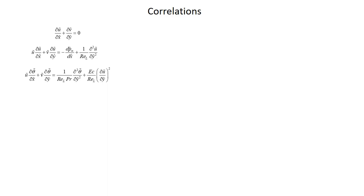This is where we left off last time. We had made our boundary layer equations dimensionless, and we ended up with these equations here. We did that because it showed us what important dimensionless parameters exist inside these equations — the Reynolds number, the Prandtl number, and the Eckert number. What we're going to do now is try to understand how, if we solve these equations for some specific situation, we can use the dimensionless solution to develop correlations which give us maximum utility.